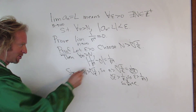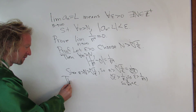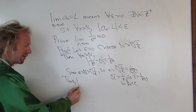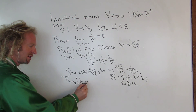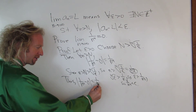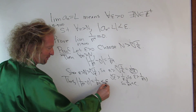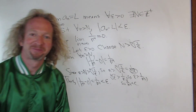So to recap: the absolute value of one over n to the fourth minus zero equals one over n to the fourth, and we just showed that's less than epsilon. That completes the proof.